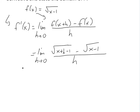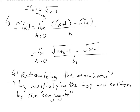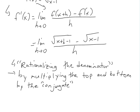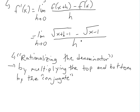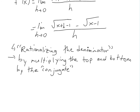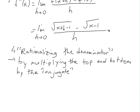The way to do it here is by rationalizing — we multiply the top and bottom by the conjugate. The conjugate is the opposite sign version of the top expression, so we multiply by square root of x plus h minus 1, plus square root of x minus 1.